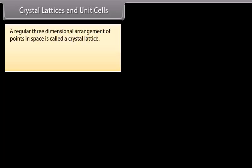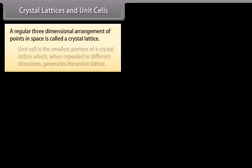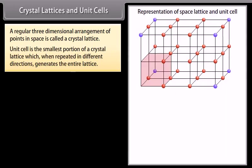A regular three-dimensional arrangement of points in space is called a crystal lattice. Unit cell is the smallest portion of a crystal lattice which when repeated in different directions generates the entire lattice.